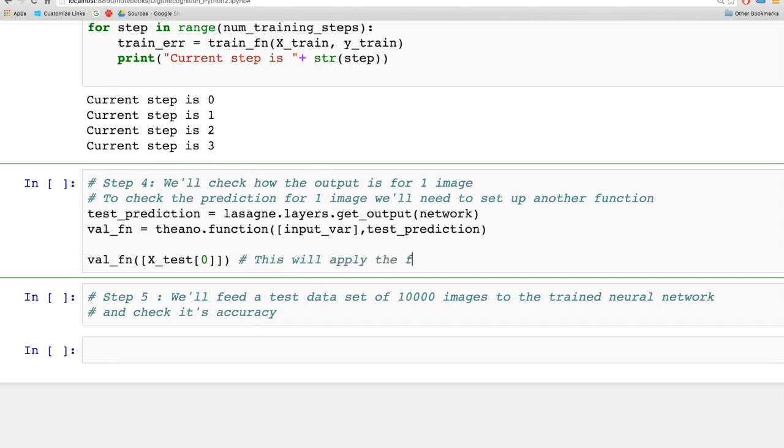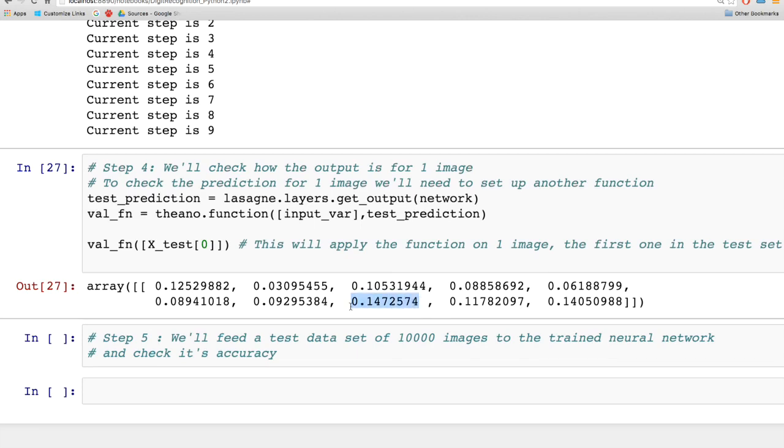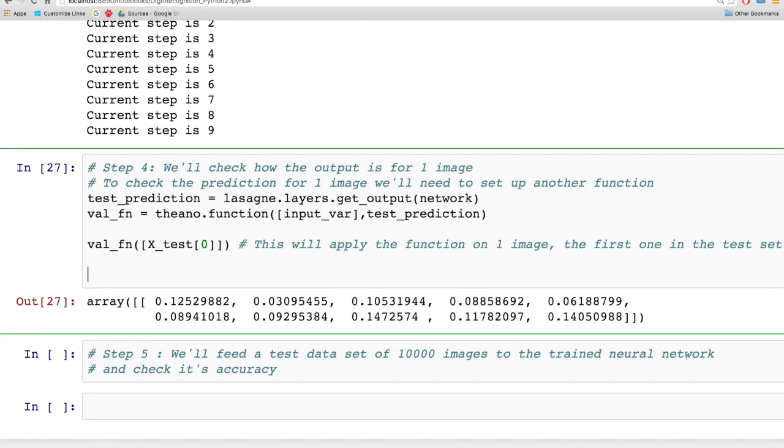The val function takes an input variable and gives the prediction of the neural network. Let's see the output. It's an array of 10 numbers, each between 0 and 1. The max value is at index 7, so the digit this network is predicting for this image is 7.